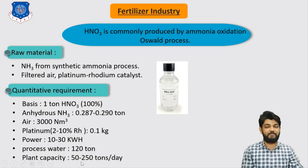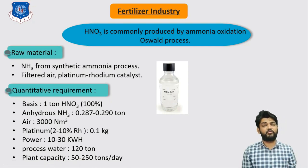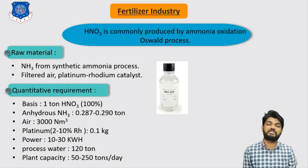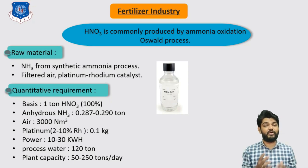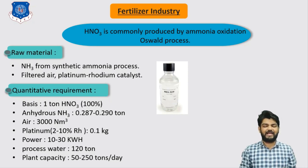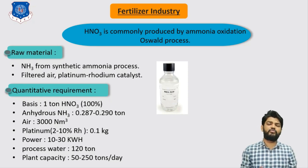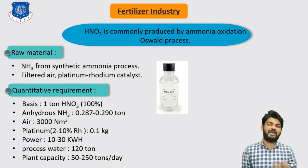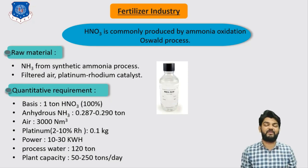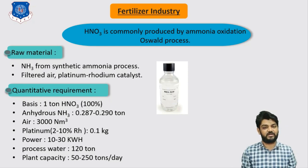In the next video we will understand the chemical reactions taking place to produce nitric acid and the flow sheet for the entire process. To summarize this lecture: we covered major engineering problems in ammonia production, applications and percentage-wise consumption of ammonia, properties of nitric acid, and the Ostwald process including raw materials and their quantitative requirements.